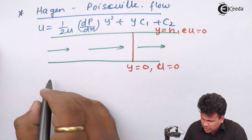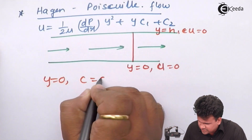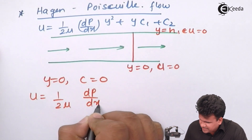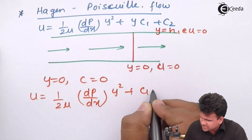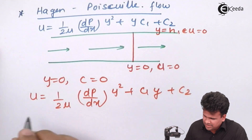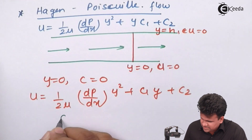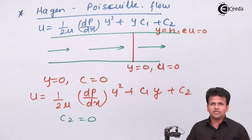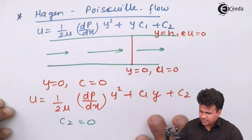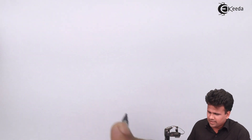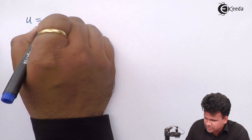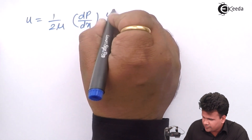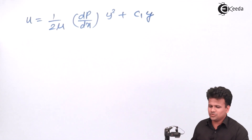The first boundary condition is y = 0, u = 0. The equation is u = (1/2μ)(dp/dx) · y² + c₁·y + c₂. Substituting y = 0 and u = 0, all terms with y vanish, giving us c₂ = 0. So our equation reduces to u = (1/2μ)(dp/dx) · y² + c₁·y.